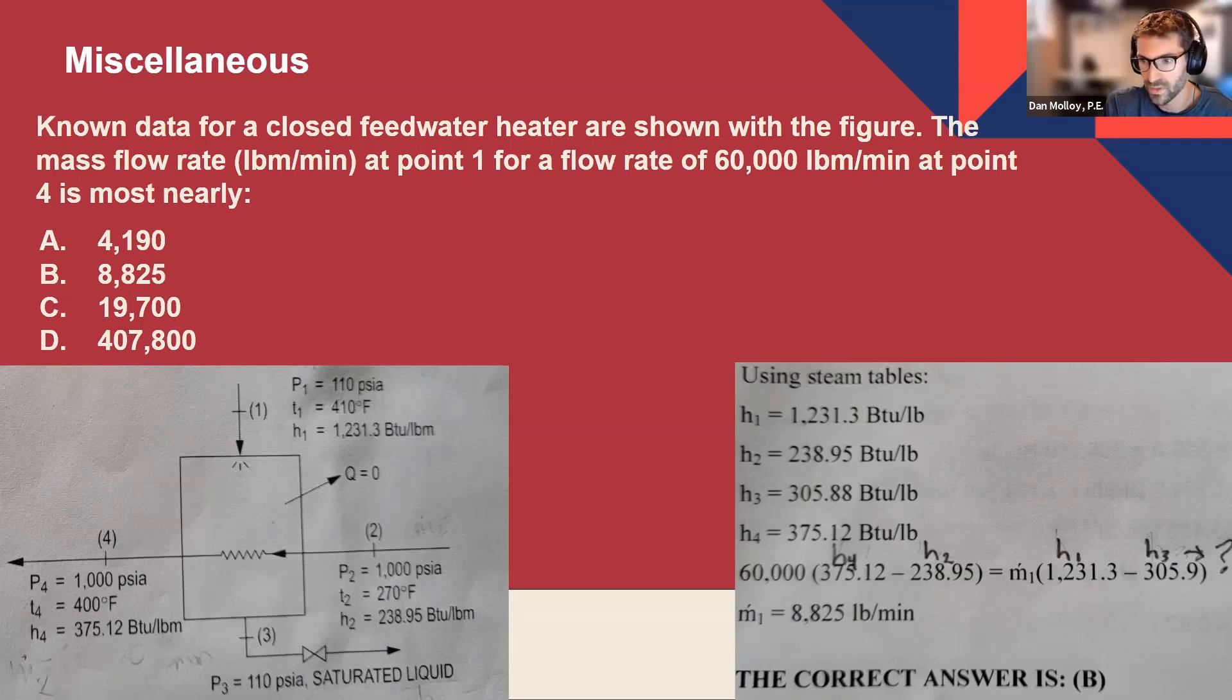And then the question becomes, alright, how do I actually use that information to find the mass flow rate? In this case, we want M1. So it's the mass flow rate through this part.